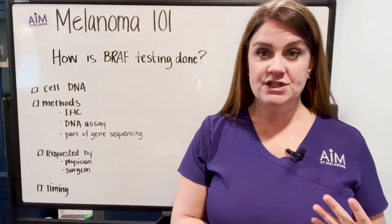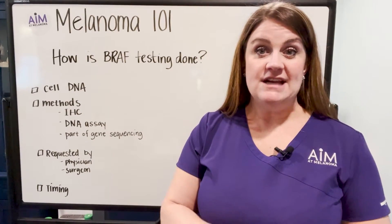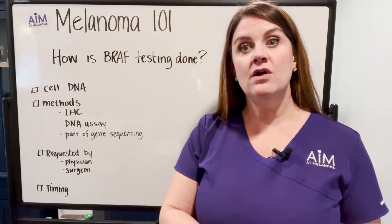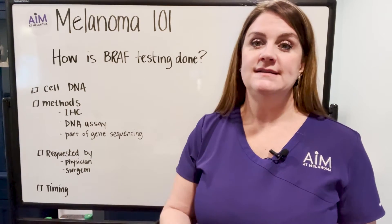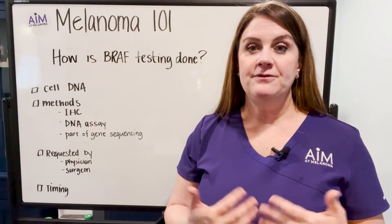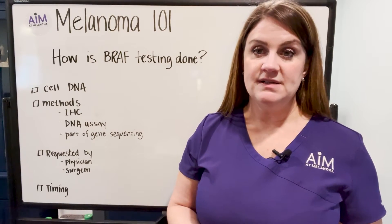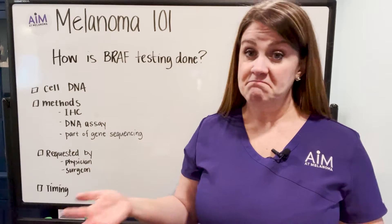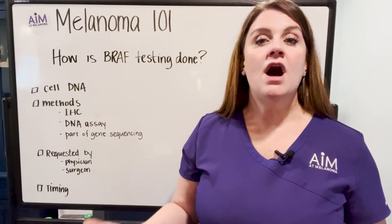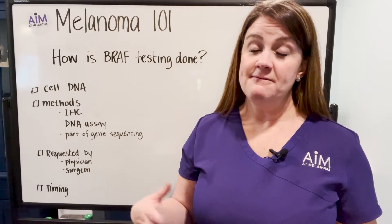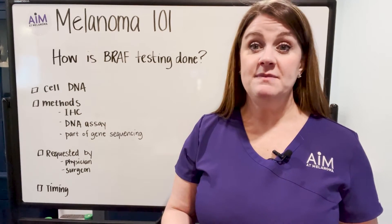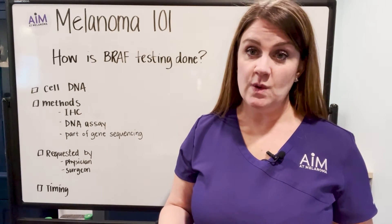BRAF is actually a gene that is present that encodes for a protein that ultimately results in cellular growth. And in about 50% of skin melanomas, there will be a mutation in BRAF that can be present. The most common type of mutation is BRAF V600E, but you can also have the BRAF V600K mutation as well.